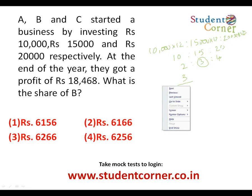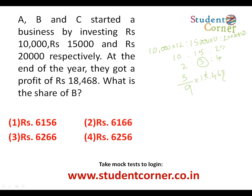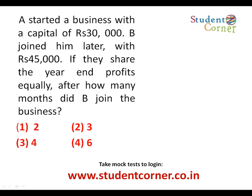B's share is three-ninths of eighteen thousand four hundred and sixty-eight, which simplifies to one-third. Dividing eighteen thousand four hundred and sixty-eight by three: eighteen divided by three is six, four sixty-eight divided by three gives one hundred fifty-six. Therefore B's share is six thousand one hundred and fifty-six rupees.